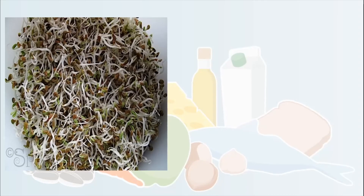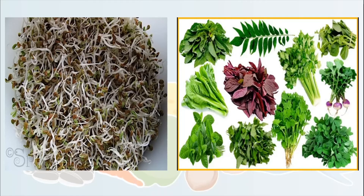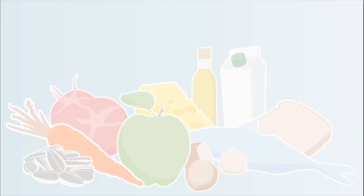Sometimes we also eat sprouts and green leafy vegetables, which are very important. Sprouts — like moog and matki — are soaked in water and tied up until they start growing, which increases their protein content and makes them very healthy. Green leafy vegetables include methi, dhania, amaranth, curry leaves, lettuce, and radish. All of these are very healthy and important for our body, so try to eat them.